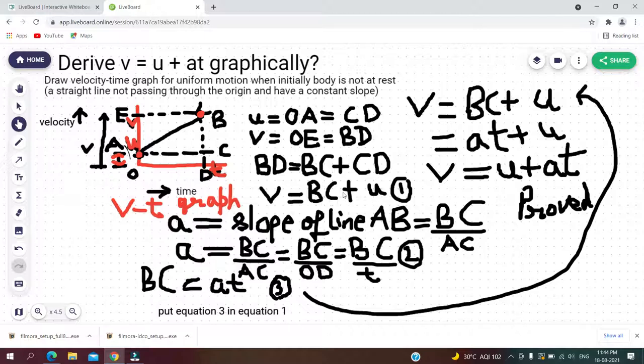Now we are not knowing the value of BC. How to reach its value? Now the slope of this line AB is equal to perpendicular upon base, BC upon AC, and in case of a velocity-time graph, the slope denotes the acceleration.